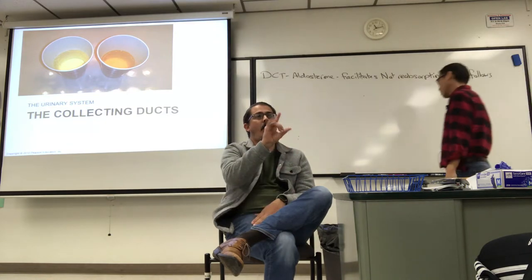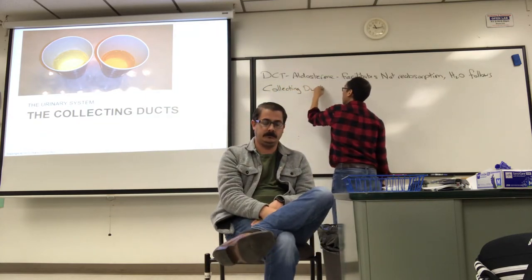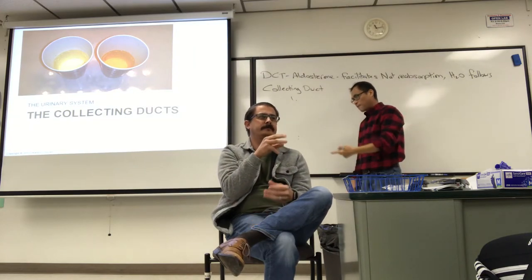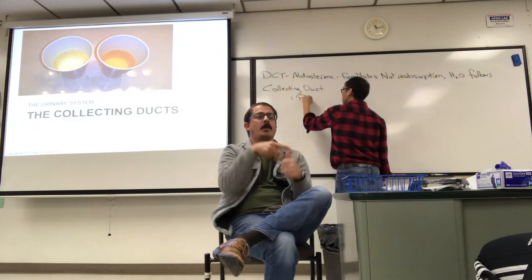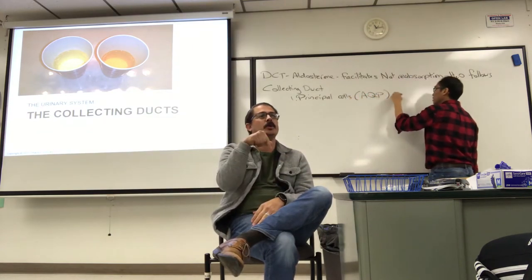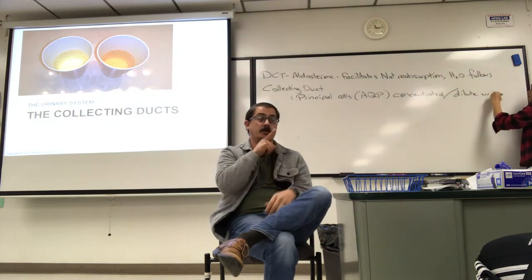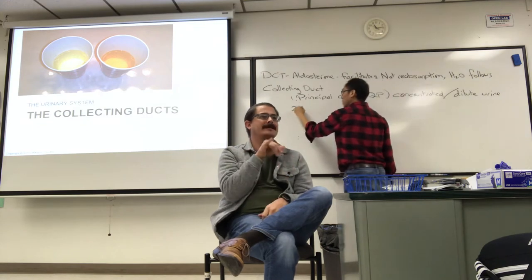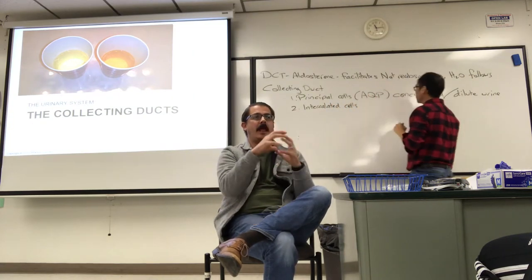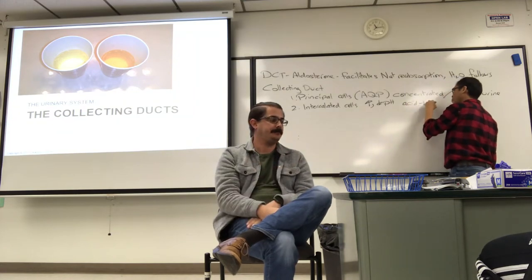The collecting duct cells have two functions. One, you can either help form concentrated or dilute urine, and those cells that perform that function are the principal cells, because they have aquaporins (AQP). The other function is acid-base balance, performed by intercalated cells, which can raise or lower the pH of the blood.